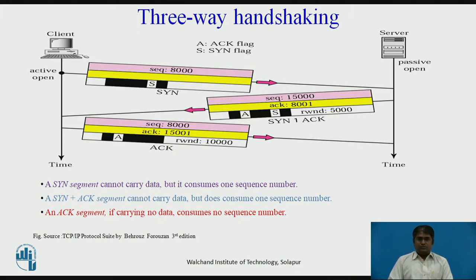To show the process, we use timelines here. Each segment has values for all its header fields and perhaps for some of its option fields. However, it shows only the few fields necessary to understand each phase. The fields shown include the sequence number, the acknowledgement number, the control flags — only those that are set — and window size.